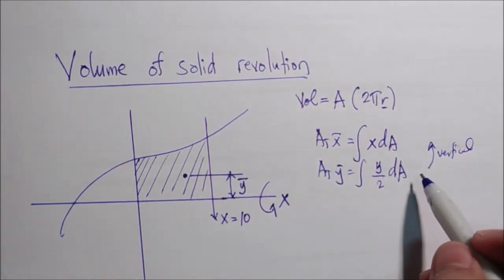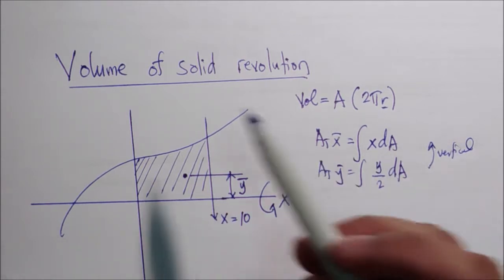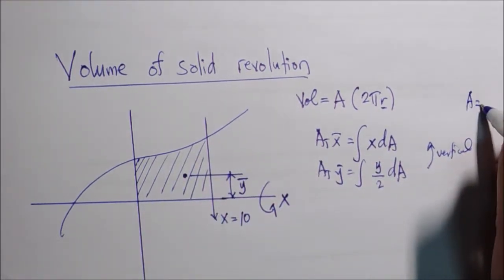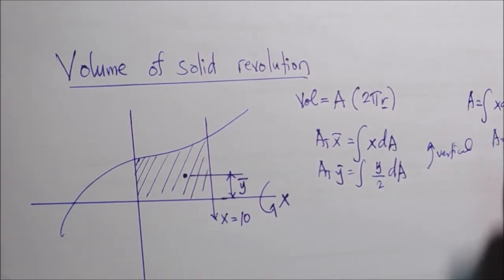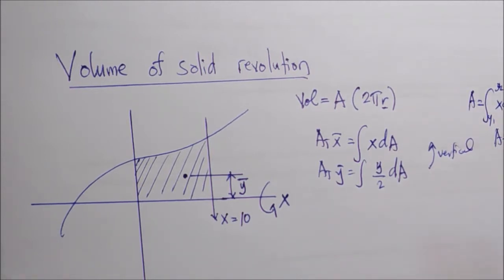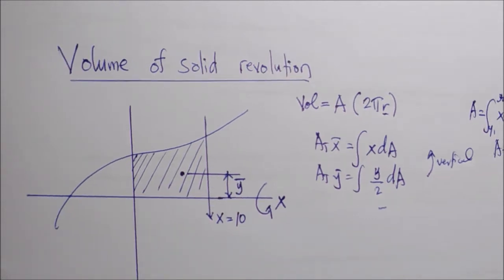This is for a vertical strip. For a horizontal strip there is another formula. We also previously discussed how to calculate the area: area equals the integral of x dy, and the area equals the integral of y dx, with limits x1 to x2 or y1 to y2. Now this discussion is a combination of those topics. Let's have an example.